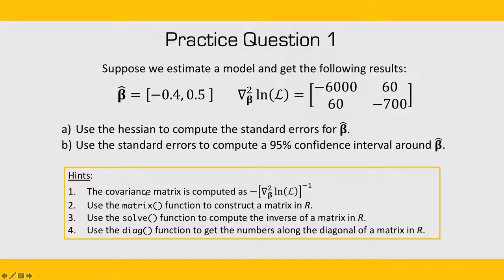For some hints, the covariance matrix, remember, is computed as the negative inverse of the Hessian. And in R, you can compute this by first using the matrix function to construct a matrix in R, and then use the solve function to compute the inverse of a matrix. And finally, you can use the diag function to get the numbers along the diagonal of a matrix.